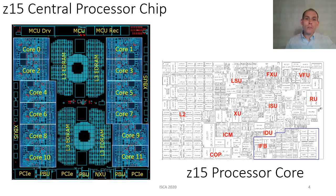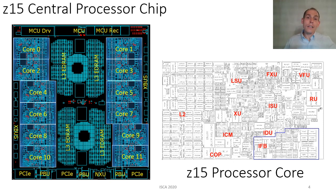Processing starts, however, with the IFB — instruction fetch and branch prediction — which, in addition to managing pipeline restarts, contains the branch predictor, with the predictor here highlighted in blue.